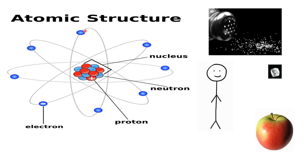Between the nucleus and the orbiting electrons there is a lot of empty space, as we can see here. This model is known as the planetary model — the idea being that it represents a solar system, where you have the sun at the center and the planets orbiting the sun. In a similar way, the nucleus represents the sun and the electrons represent the planets orbiting the sun. It's not a completely accurate picture of the structure of the atom, but it's one that many may visualize when they think of the atom.